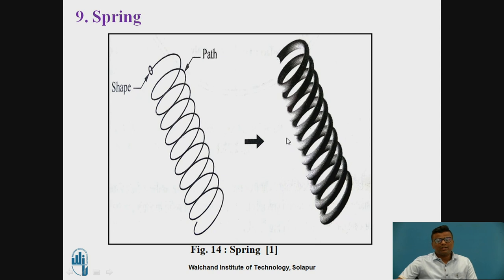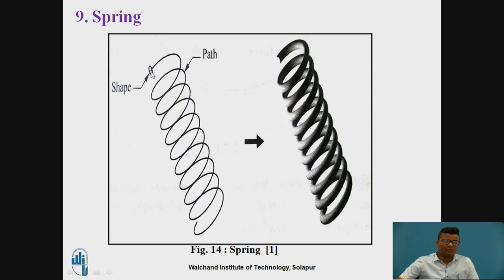The last point: spring. First, you have to create one simple helical part in the 2D sketch. After that, take one plane and on that plane at that point you have to create one circle. With the help of the spring command or the multi-section solid command, you can create a 3D spring. Very easily you can create the 3D spring inside CATIA.